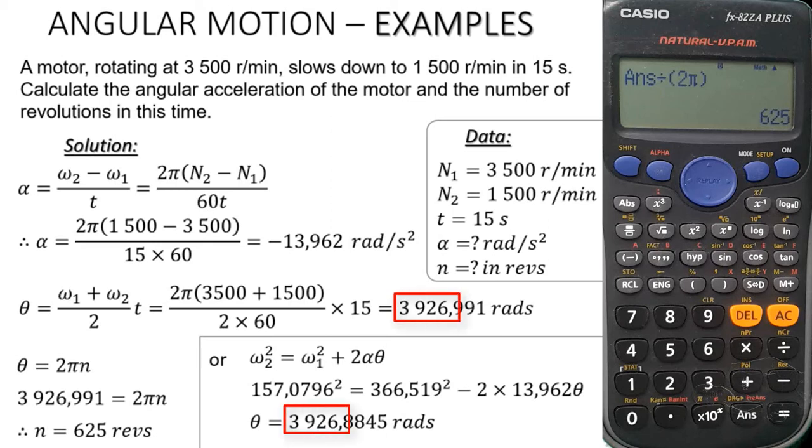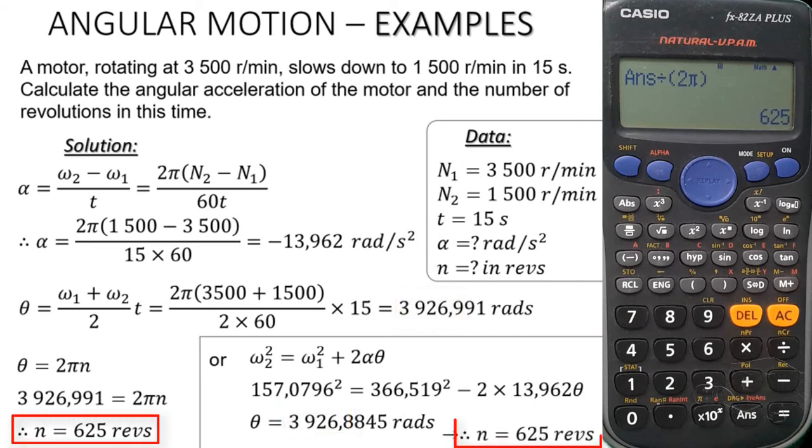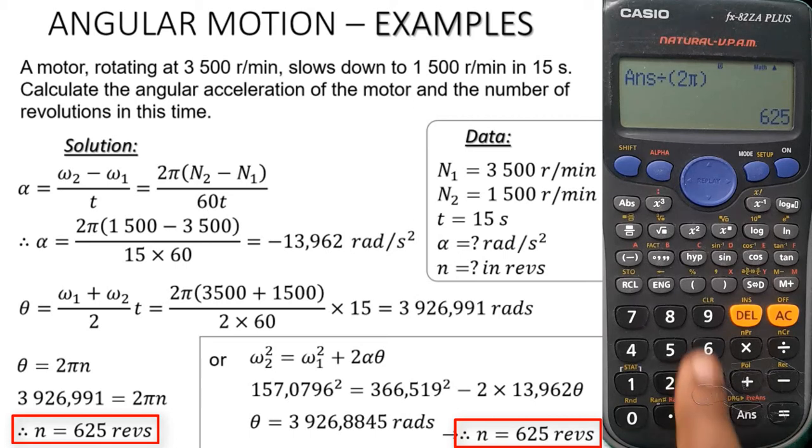If you want to compare your thetas or your angular displacement, you will notice that if you omit the decimals, they look exactly the same. So what does that tell you? It means that even the number of revolutions will be the same. You can just press those digits and then find that the number of revolutions is exactly the same as the first one, which is 625.